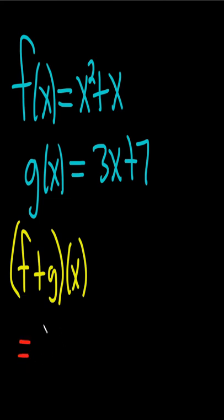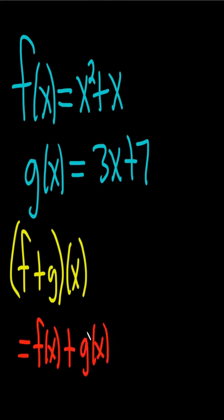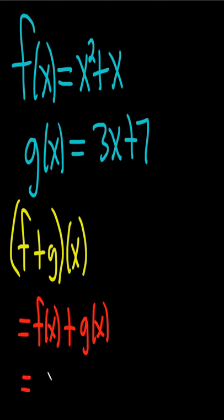If you wanted to show the work, you'd write down the definition of this. It's just f(x) + g(x). That's what it means - that's the definition of (f+g). Basically, you're just adding them up. You could actually skip the steps and add them directly, but I'll show the work.